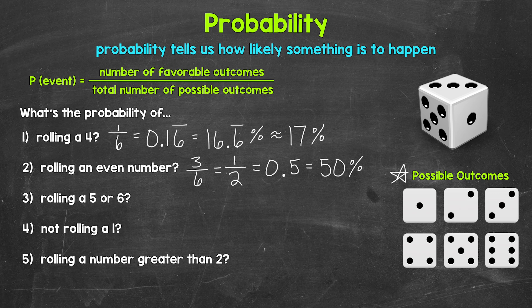Moving on to number three: what's the probability of rolling a five or six? Both of these are a favorable outcome — we either want to roll a five or a six. Think of it like this: you need to roll a five or a six to win a game, so what are your chances? One side of the die has a five and one side has a six, so that gives us two favorable outcomes. Two over the total number of possible outcomes — six. Our fraction is two over six — two sixths.